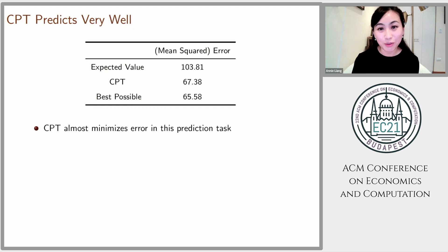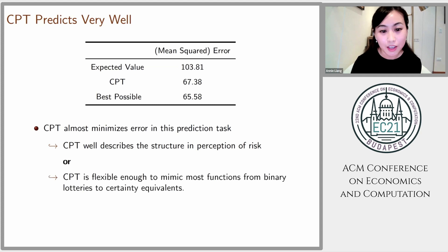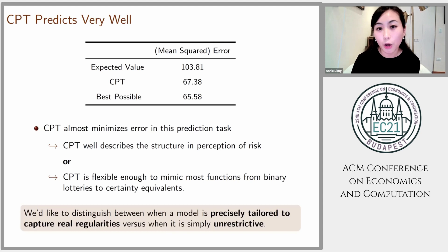CPT turns out to be remarkably good — it almost achieves this best possible error. There are two ways of interpreting that. One is that CPT is a fantastic model, really well describing the structure and perception of risk, with that S-shaped probability weighting distortion function. Another possibility is that even though this model technically only has four free parameters, those four parameters are sufficient to give the model enough expressiveness to mimic any relationship from binary lotteries into certainty equivalents. These are two very different explanations, and what we'd like to do is distinguish between when the model is precisely tailored to capture real regularities versus when it's simply unrestricted.